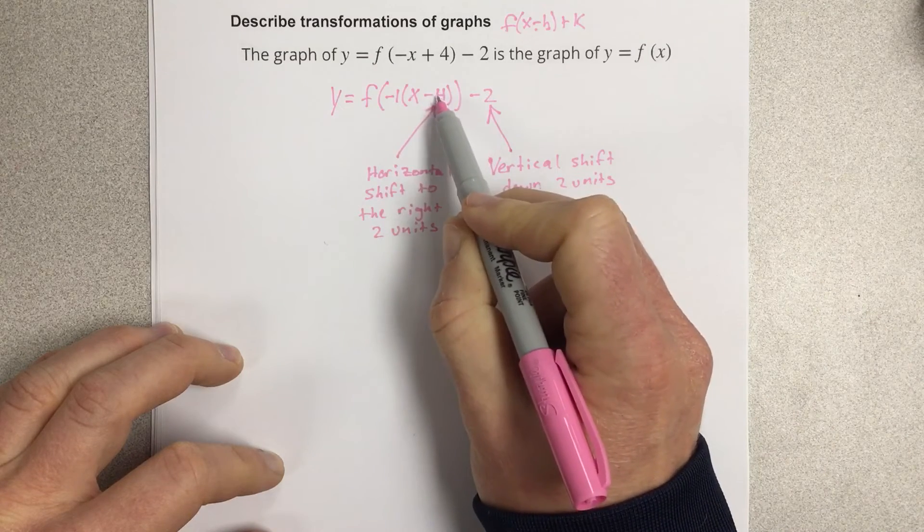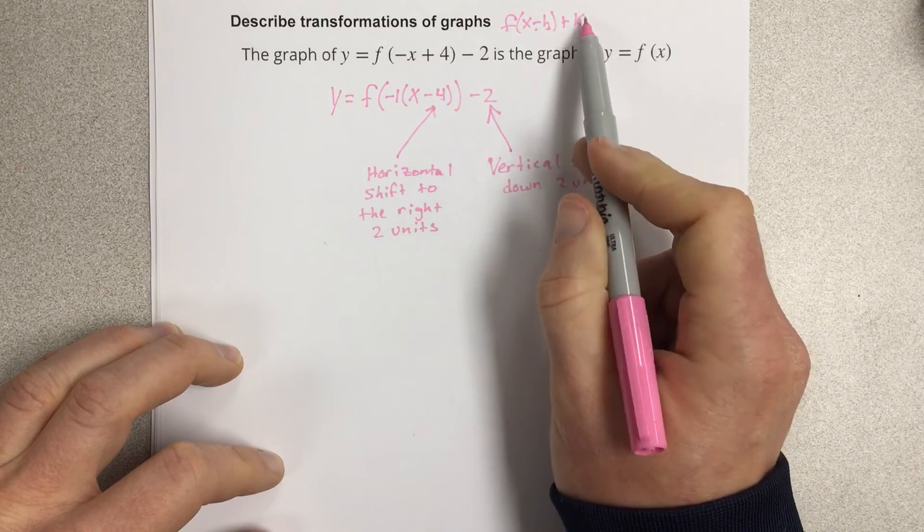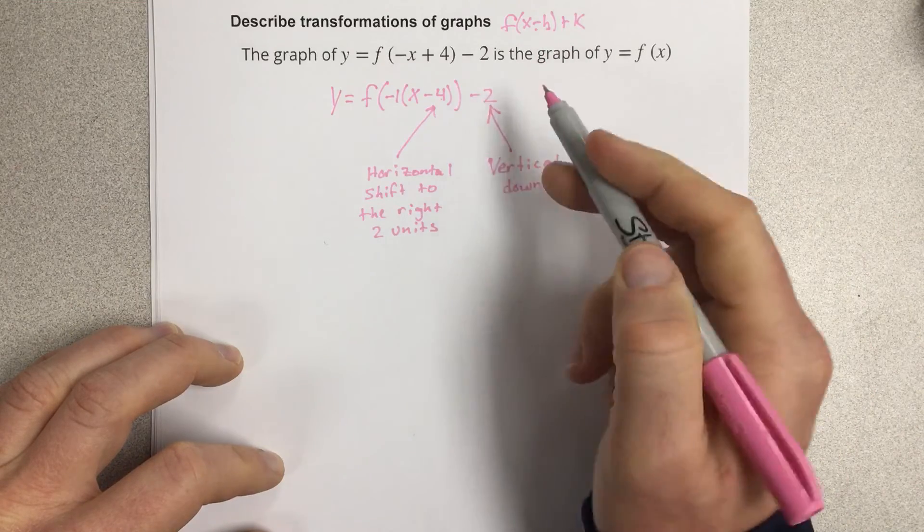So opposite sign for the horizontal shift. This is plus k for the vertical shift, so it's just whatever that number is.